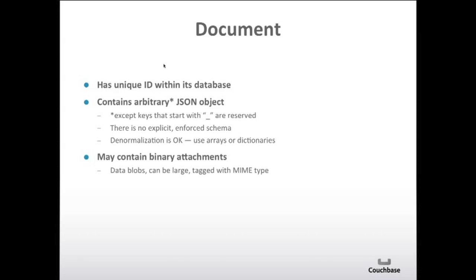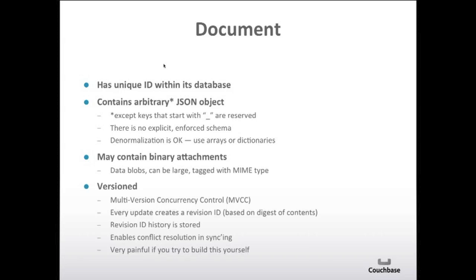Documents can contain binary attachments — the canonical example would be an image attachment. There's no restriction on size, and they can be tagged with a MIME type, so you can put a Word document in there if you need to. Documents are versioned using multiversion concurrency control. The biggest thing to know about this is that it's very painful if you try to build this yourself. The main thing it does is enable conflict resolution when you're syncing, because documents can be edited offline on different devices and there has to be a way to deal with conflicts when multiple edits have been made on the same document in different places.